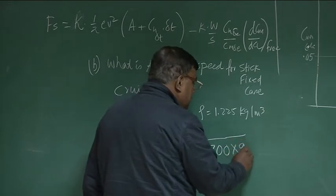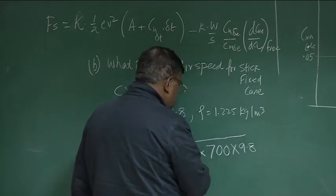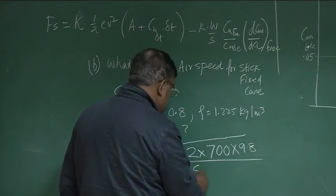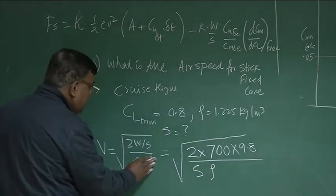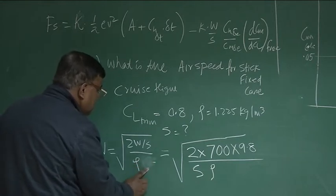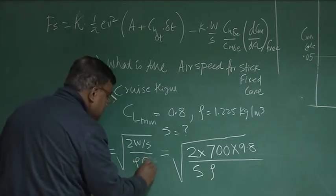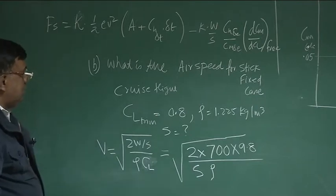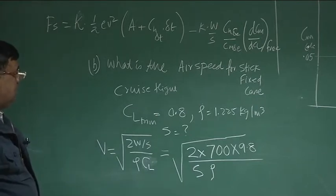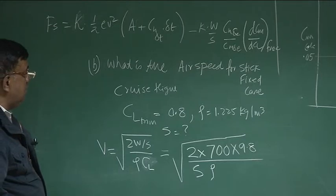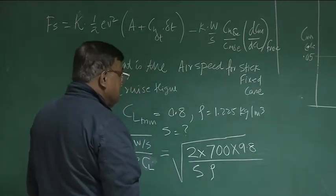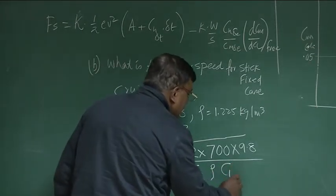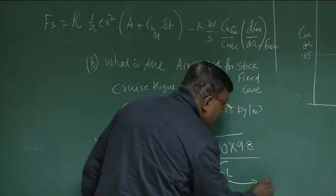Then divide by S, divide by ρ. Oh sorry, V will be equal to, this is by CL. Sorry, correct. We will write this. V will be equal to 2W by S. V will be equal to under root 2W by S ρ CL. So S is there, ρ is here and CL, CL I know is 0.8.